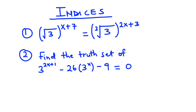Hello guys, welcome back to this channel. In today's video we are going to solve some questions on indices. We have two questions here. For the first question we have the square root of 3 exponent x plus 7 equals the cube root of 3 exponent 2x plus 3. For the second one we are going to find the truth set of the equation 3 exponent 2x plus 1 minus 26 times 3 exponent x minus 9 equals 0.